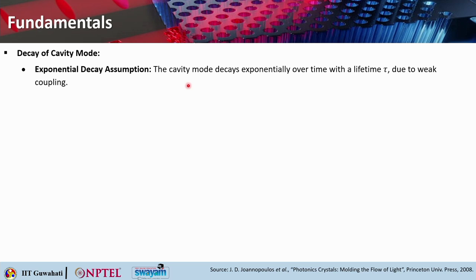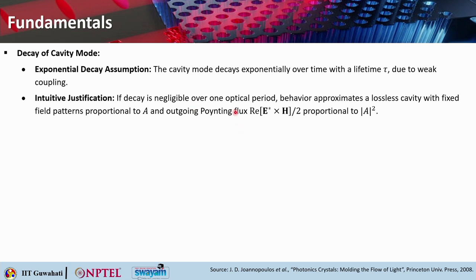If the decay is negligible over one optical period, the behavior approximates a lossless cavity with fixed field patterns proportional to A, and the outgoing Poynting flux — Re(E* × H)/2 — is proportional to |A|². To begin with, we are considering the cavity mode by itself with no incident power coming from the waveguides.